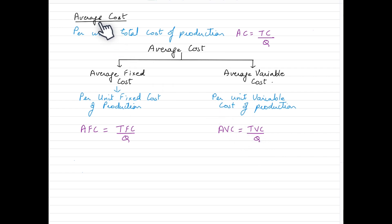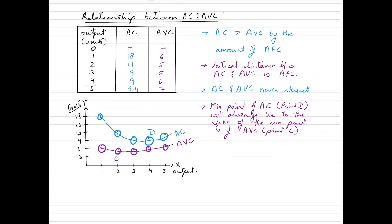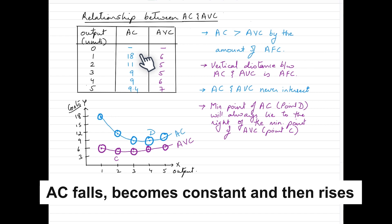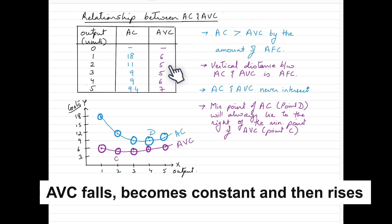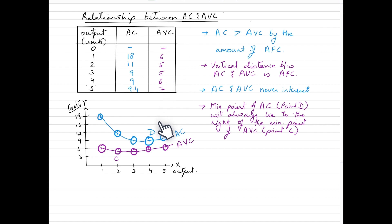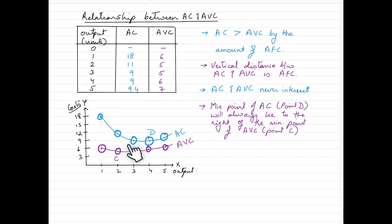Now let's take a look at the relationship between average cost and average variable cost using a schedule and graph. Output is measured in units going from zero to five. Average cost shows a trend where it falls and then rises. Average variable cost has more or less the same trend — falling, reaching its minimum, becoming constant, and then rising again. These figures are plotted on the graph: the blue curve is average variable cost and the purple curve is average cost, and we've joined the dots to get the individual AC and AVC curves.